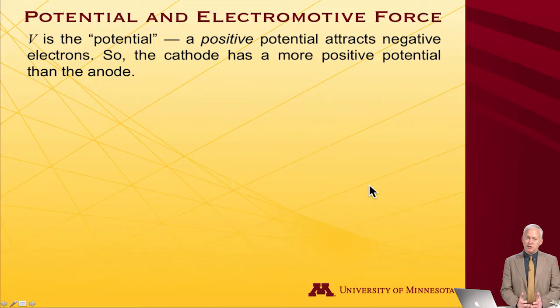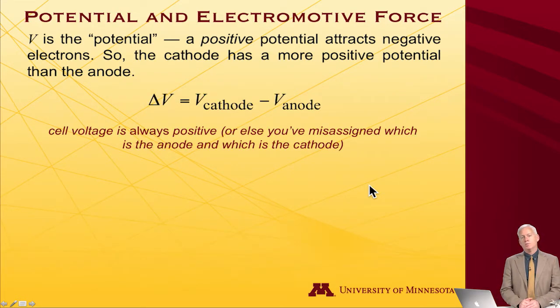In an electrochemical cell, the cathode to which the electrons are flowing must have a more positive potential than the anode. And so we define delta V, the total potential within the cell, as the potential of the cathode minus the potential of the anode.